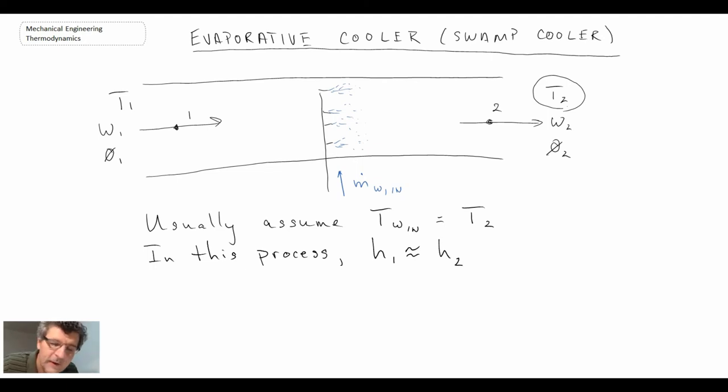So if we were to look at this on our psychometric chart, we have our dry bulb temperature here and specific humidity there. If you recall from the chart that I showed you in an earlier lecture, the enthalpy lines run up into the left. Consequently, if we're talking about a constant enthalpy process...